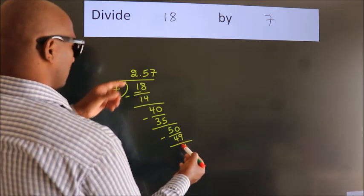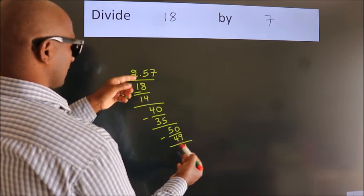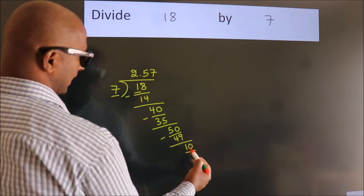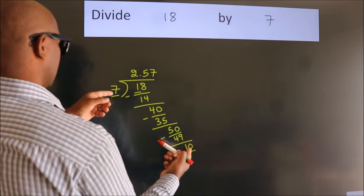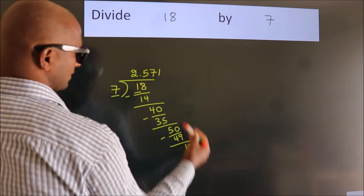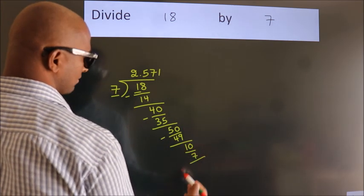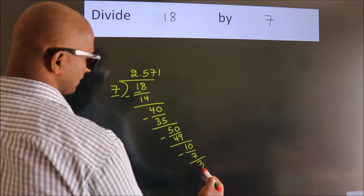After this, we already have the decimal. So directly take 0. So 10. A number close to 10 in 7 table is 7 once, 7. Now we subtract. We get 3.